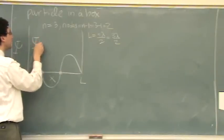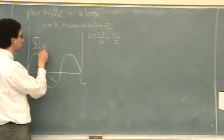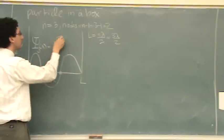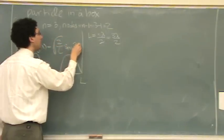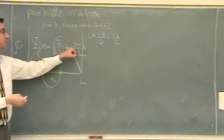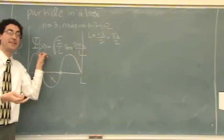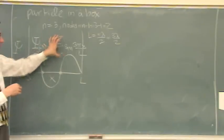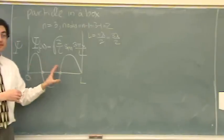The wave function formula — I'll give you this on the test, you'll need to just plug in for n. In this case, n equals 3 gives us the square root of 2 over L, sine of 3 pi x over L. The only thing you would need to do on the test is put the number 3 in those two spots — it would be n's on the test.